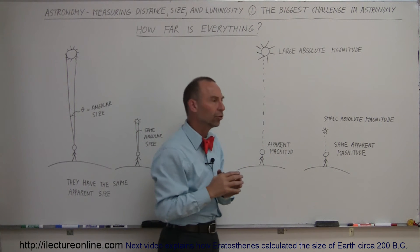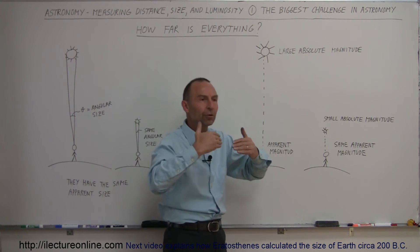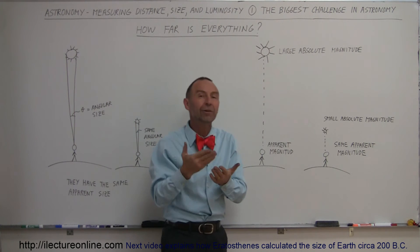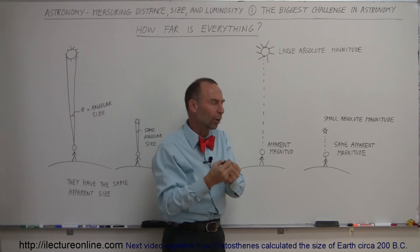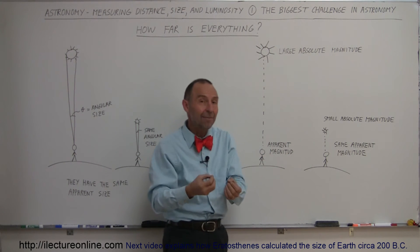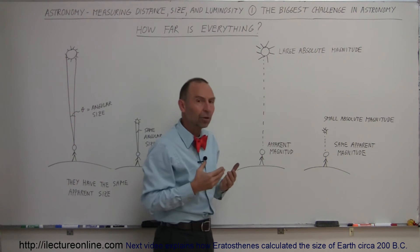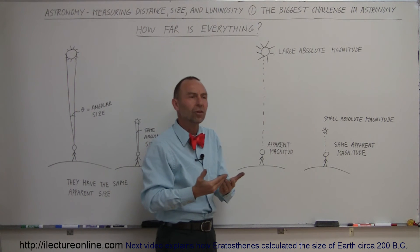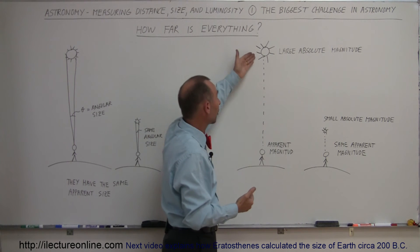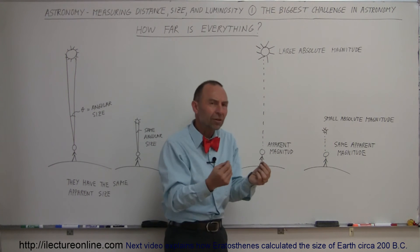But what we see from the Earth when we observe stars in the universe, we see what we call their apparent magnitude, how bright they appear to us. So in this case, both stars will appear to have the same apparent magnitude. They will look the same brightness, even though this one is much brighter than the other, simply because this one is much farther away than this one. So they appear the same brightness.